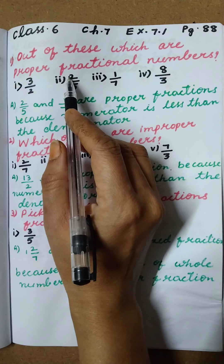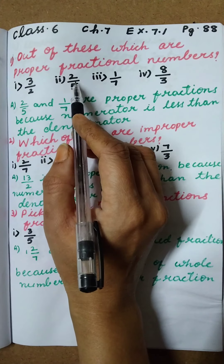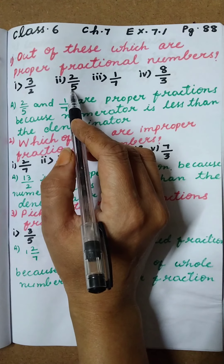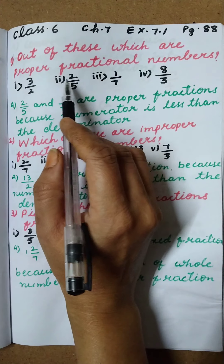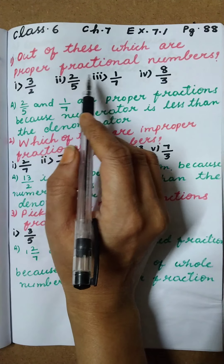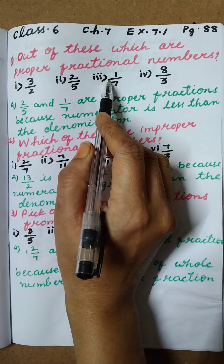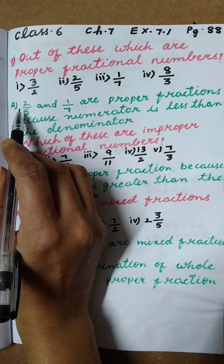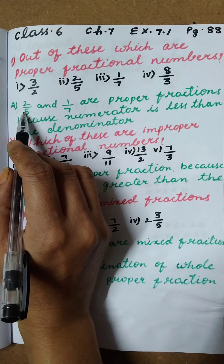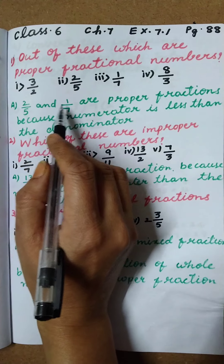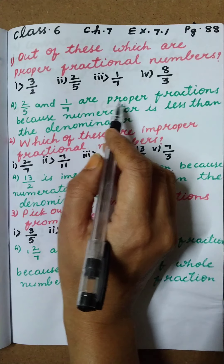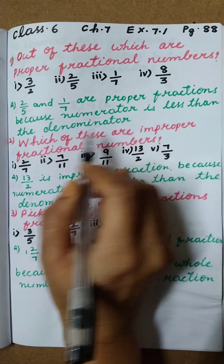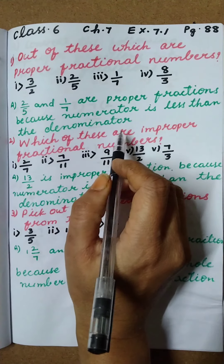Are you observing? Here numerator is 2, here denominator is 5. So numerator is less than the denominator. So the second one and third one are the proper fractions. I have written the answer here: 2 by 5 and 1 by 7 are proper fractions because numerator is less than the denominators, right?